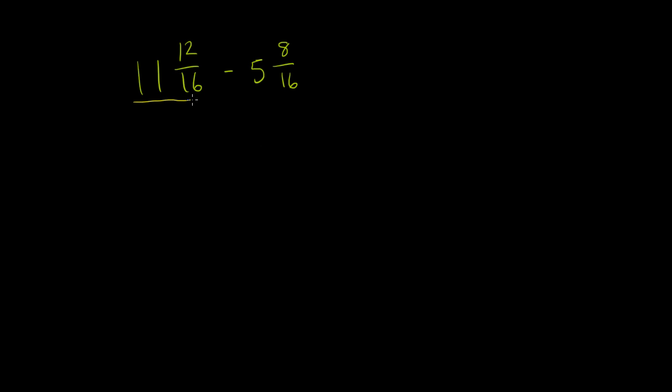So I can rewrite this number right over here as 11 plus 12 over 16, and from that I am going to subtract—and I'll put parentheses here because I'm going to break this part open—I am going to subtract 5 plus 8 over 16.